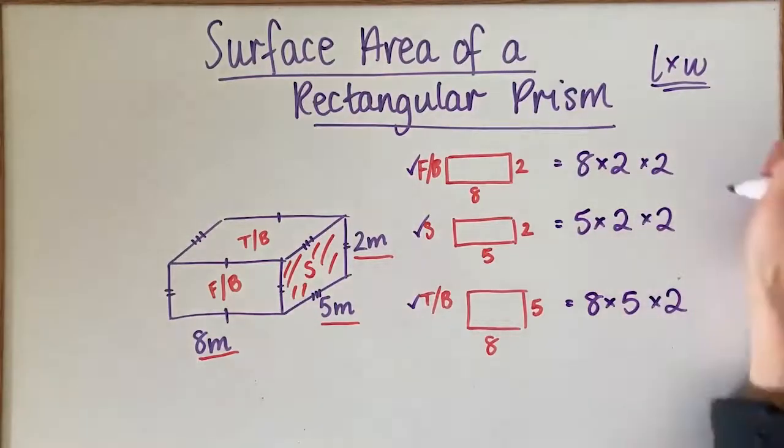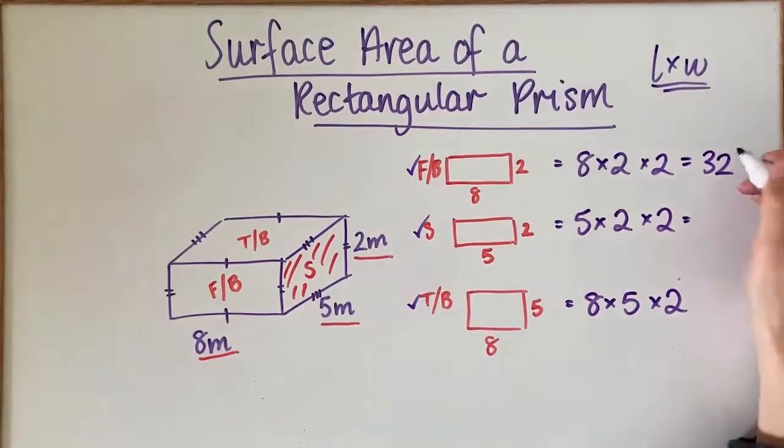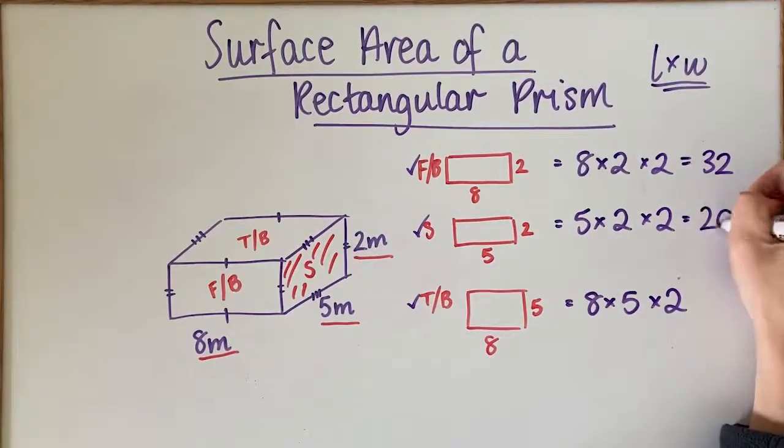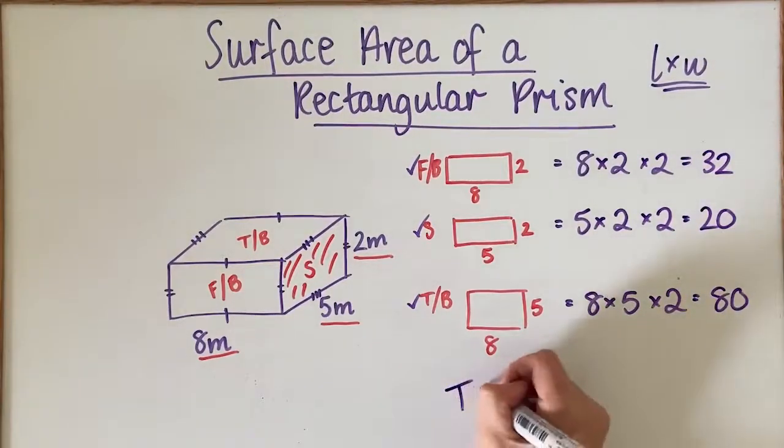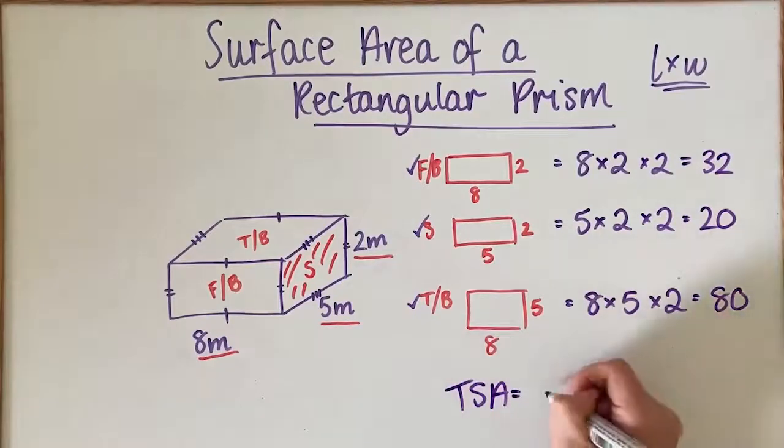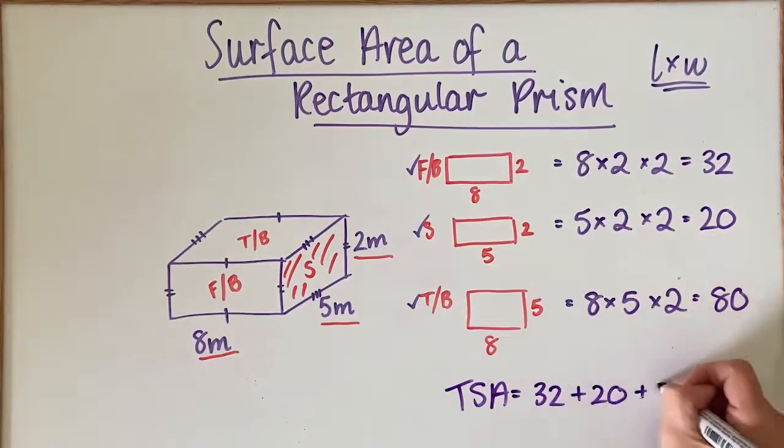This value would be 32, this value would be 20, and this value would be 80. So for my total surface area, I need to go 32 plus 20 plus 80, which is going to be 132 metres squared.